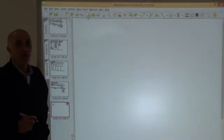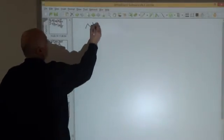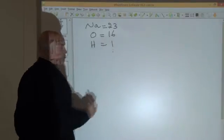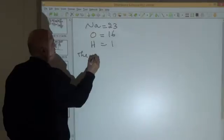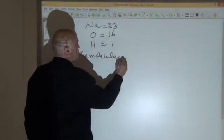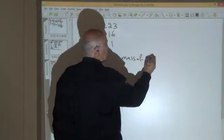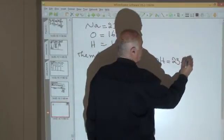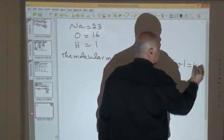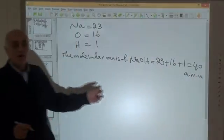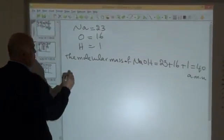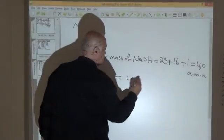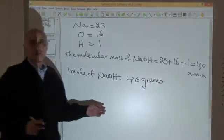How to calculate the molecular mass of sodium hydroxide: the atomic mass of sodium equals 23, oxygen equals 16, and hydrogen equals 1. The mole means the molecular mass expressed in grams. So one mole of sodium hydroxide equals 40 grams.